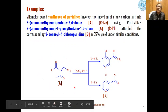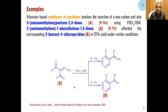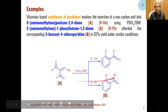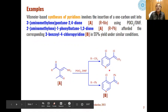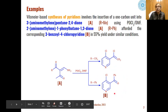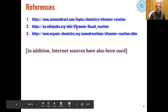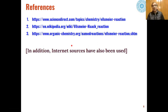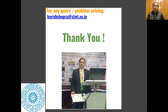The only addition is that the product formed undergoes cyclization to give pyridine systems. In the case where R is a phenyl group, 3-benzoyl-4-chloropyridine is obtained as the product through the Vilsmeier reaction. These are the references used for preparing this lecture. Thank you very much.